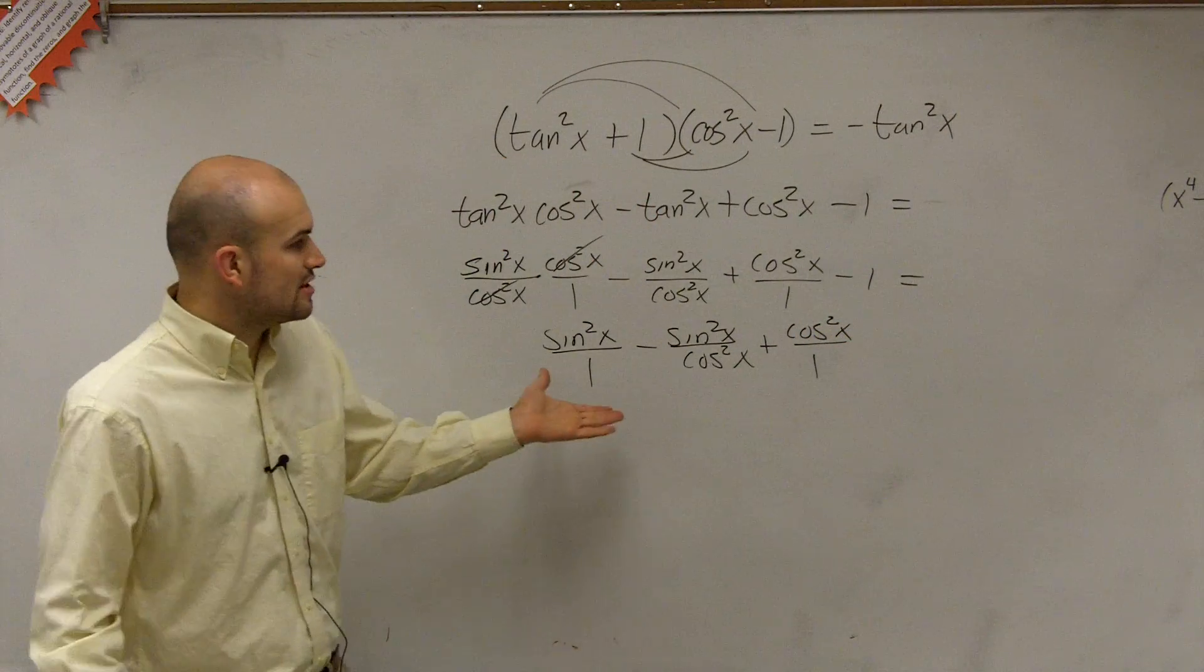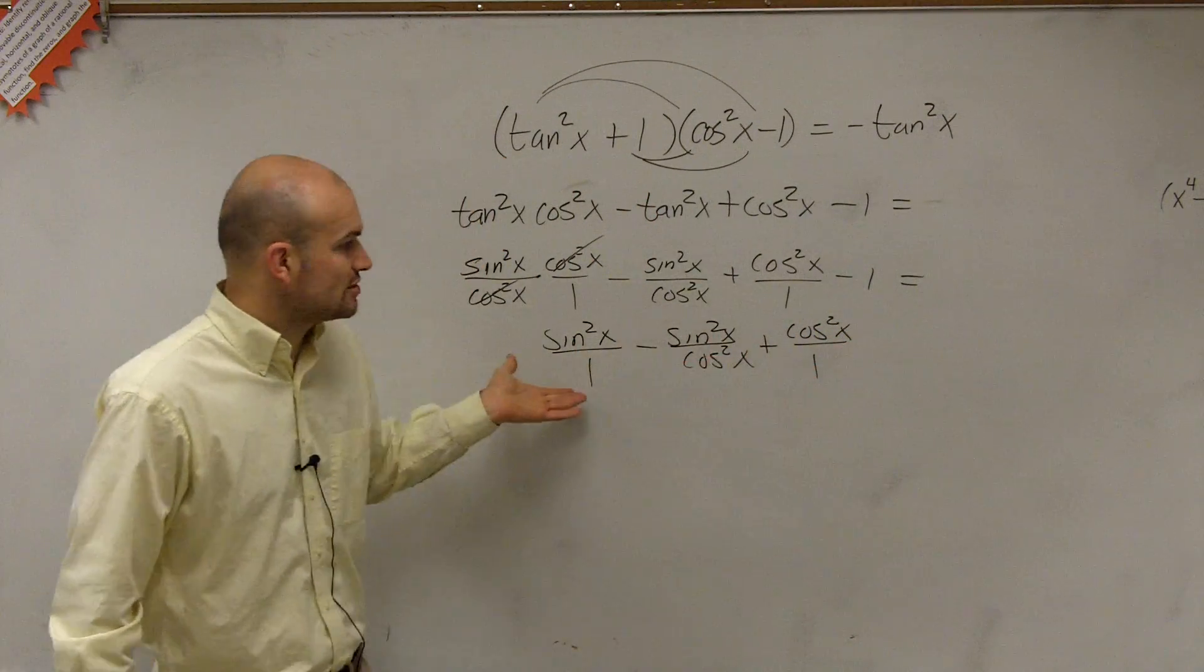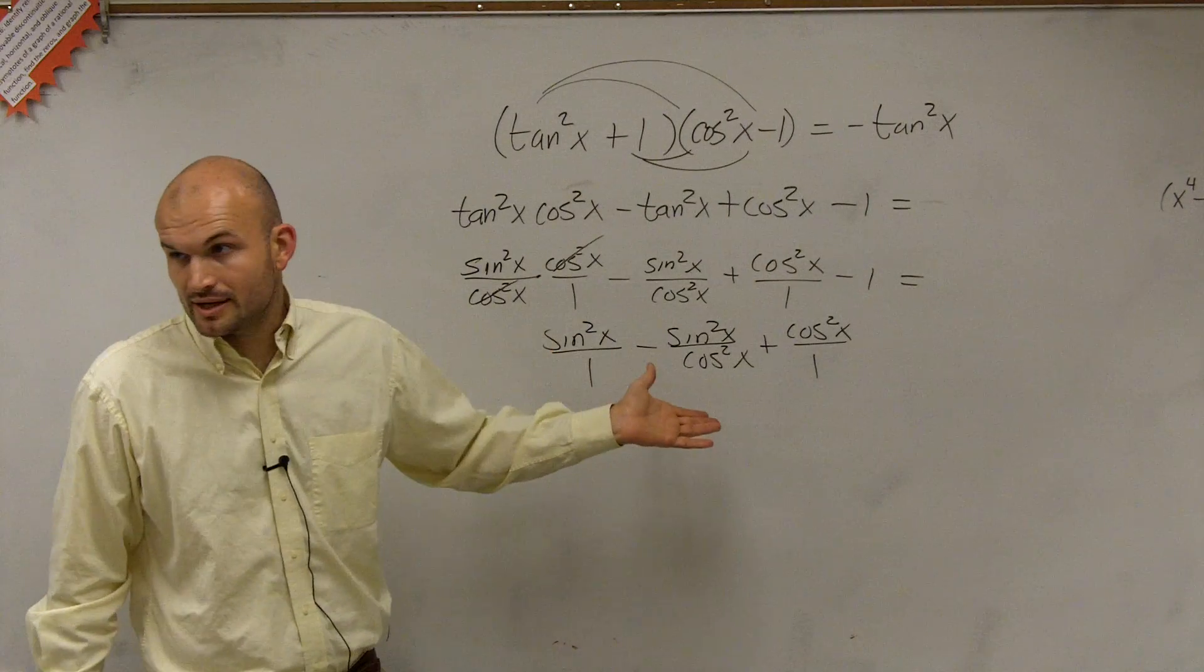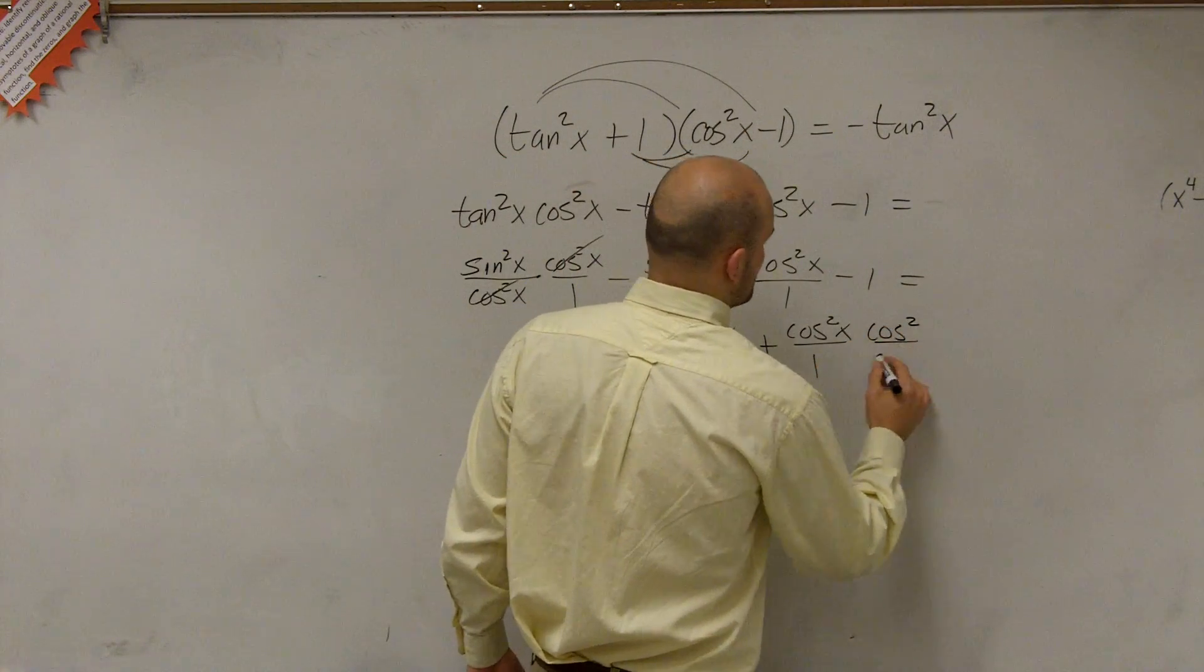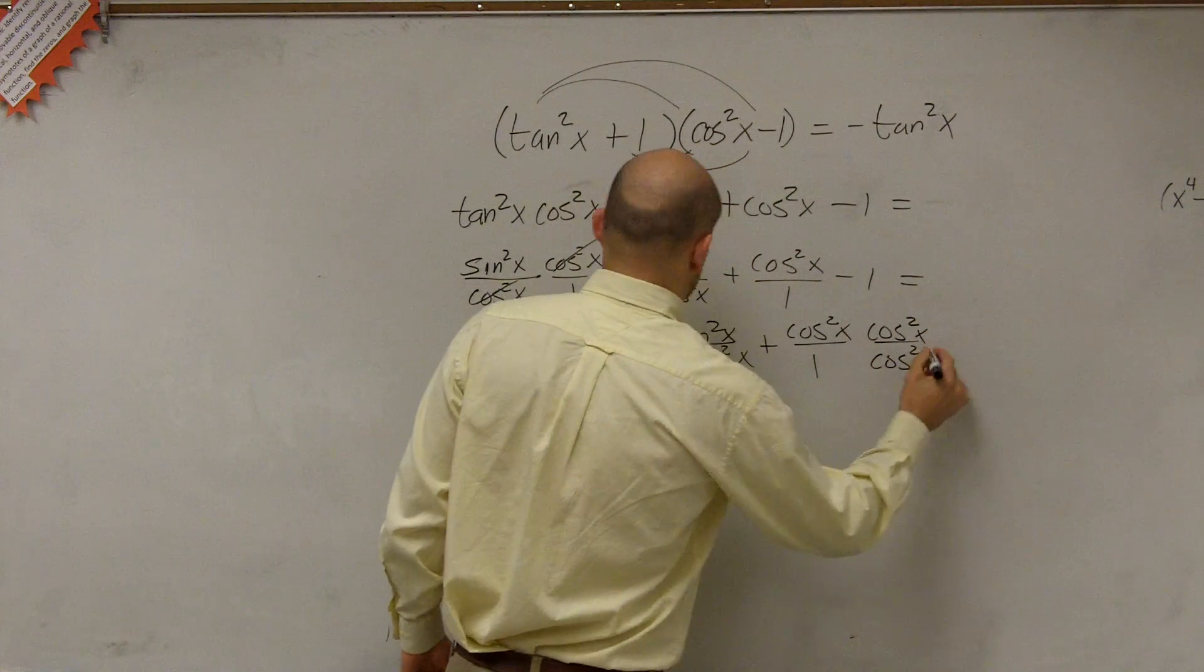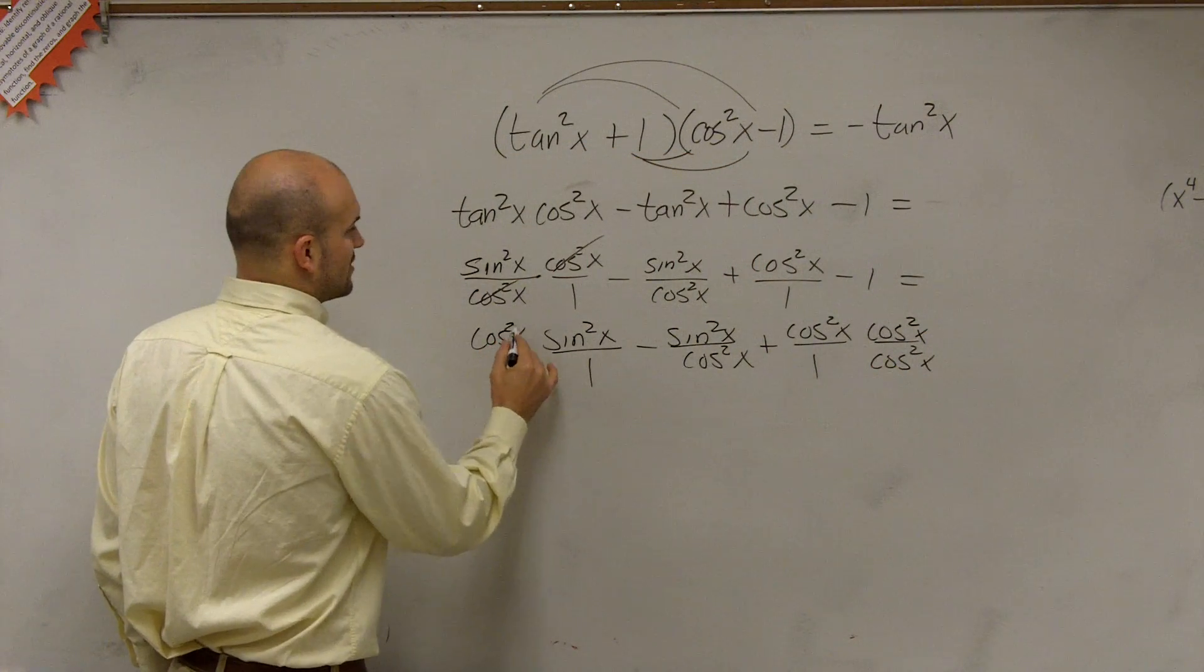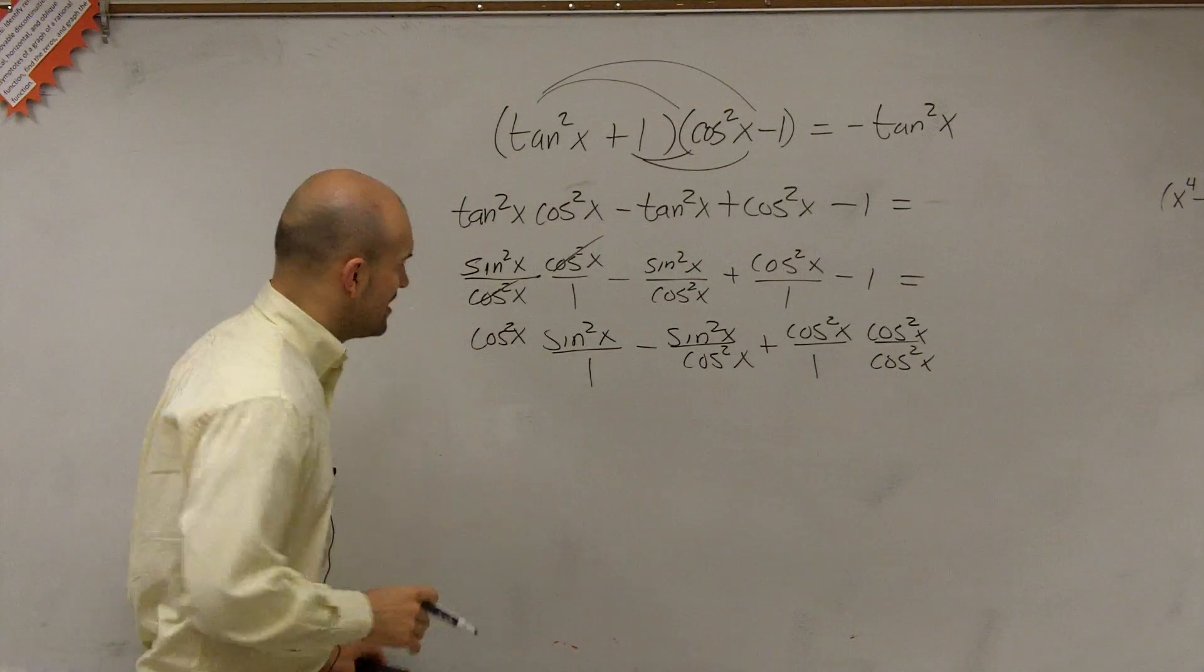So what I need to do is get these all to have the same common denominator, right? And then I can add them. So I'll multiply by cosine squared over cosine squared of x. Here, I'll multiply by cosine squared of x. Oh no, that was it. I was right.